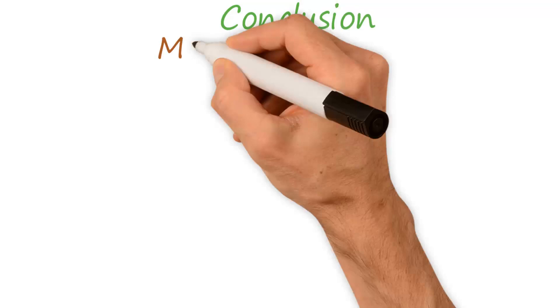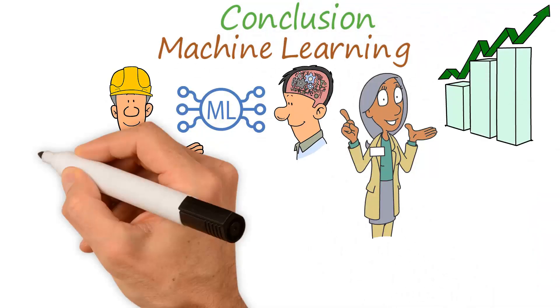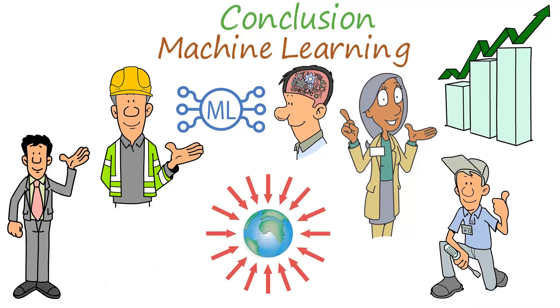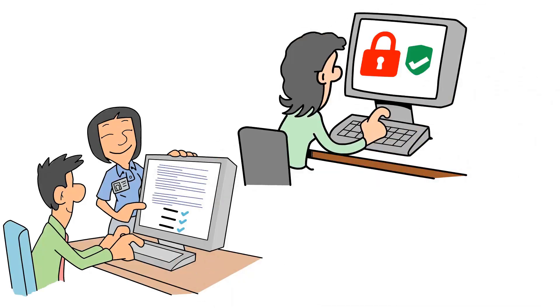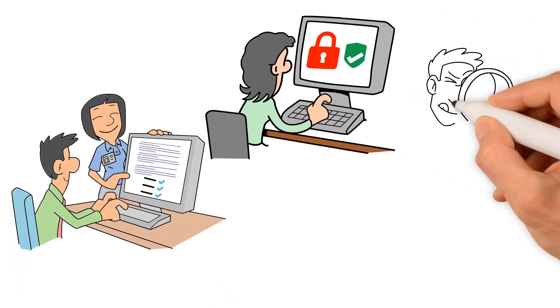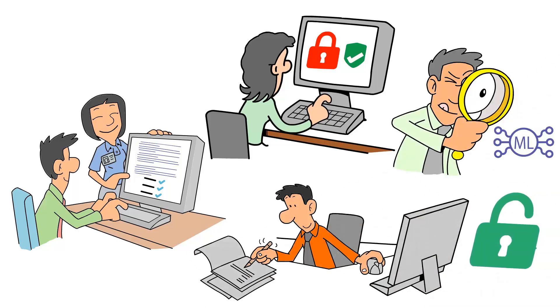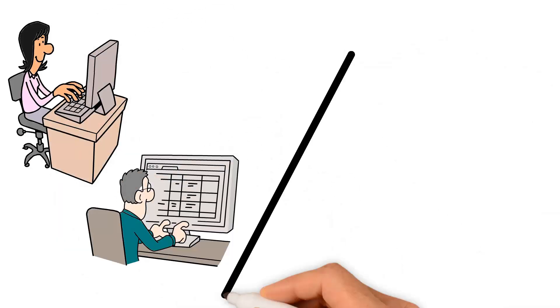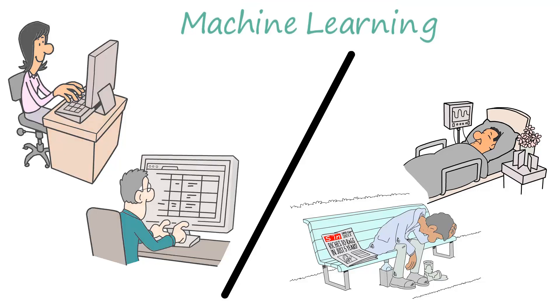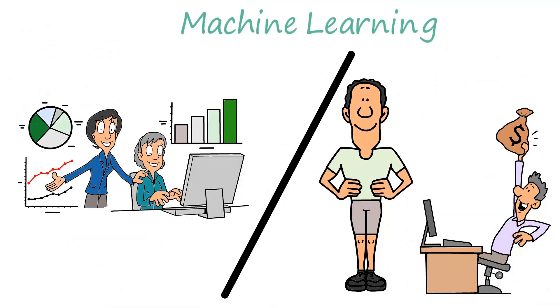In conclusion, machine learning is a rapidly developing field that has the potential to transform many industries and have a significant impact on the world. However, it's important to carefully consider the ethical and privacy implications of this technology and to continue to invest in research and development to unlock its full potential. Whether we're using machine learning to improve decision-making in business or to tackle some of the world's biggest challenges, this technology has the potential to revolutionize the way we live and work in the future.